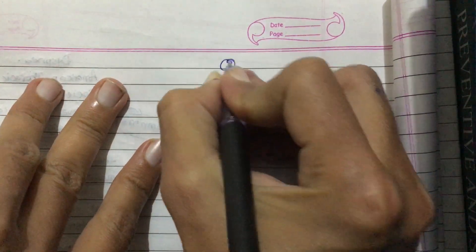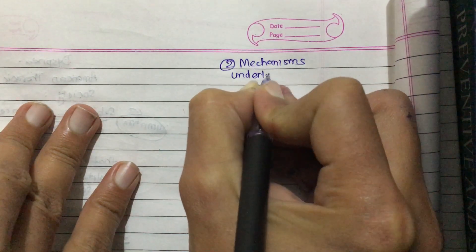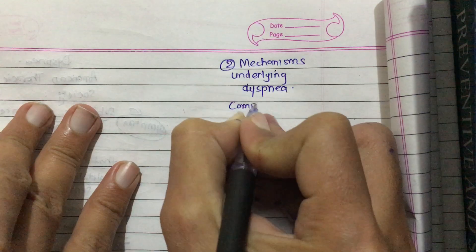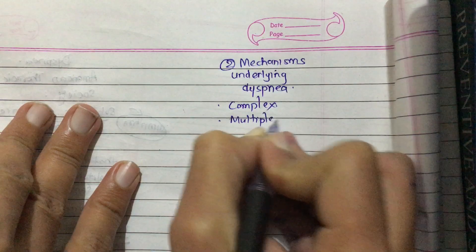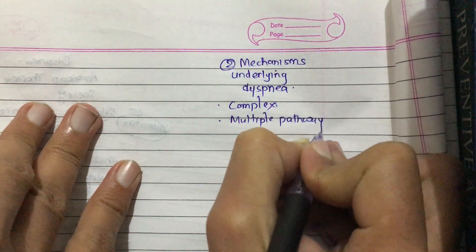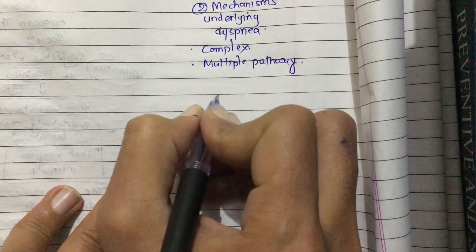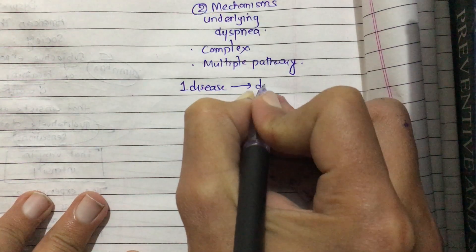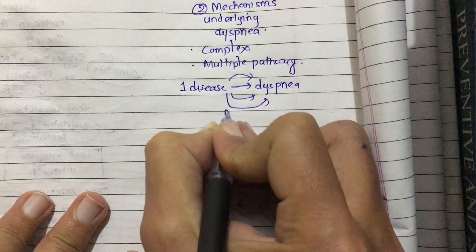Let us discuss the mechanisms underlying dyspnea — how dyspnea is caused. The mechanism underlying dyspnea is complex because it involves multiple pathways. It is likely that a given disease state might produce the sensation of dyspnea via more than one underlying mechanism. One disease can produce dyspnea via multiple mechanisms.